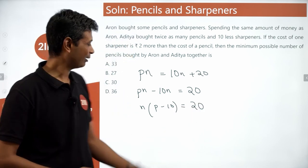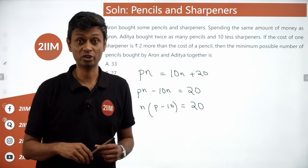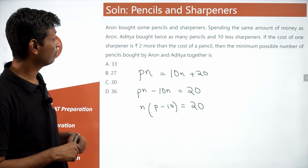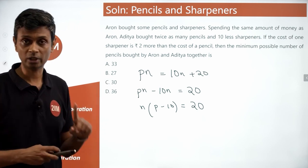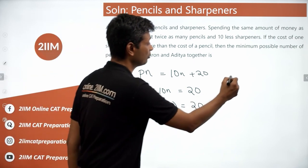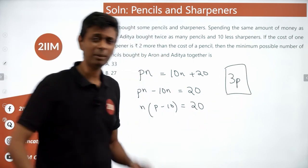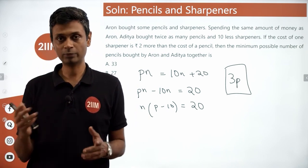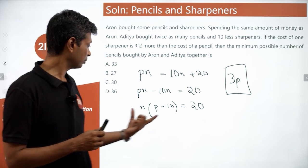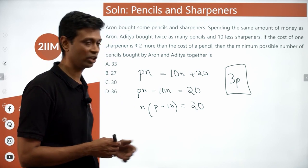Lovely. This is the number of pencils minus 10. Number of pencils has got to be an integer. Now we want to find the minimum possible value of pencils bought by Aaron and Aditya together. Together they bought 3P pencils, P plus 2P. We want to find the minimum possible value of P, given that P minus 10 times n is 20.